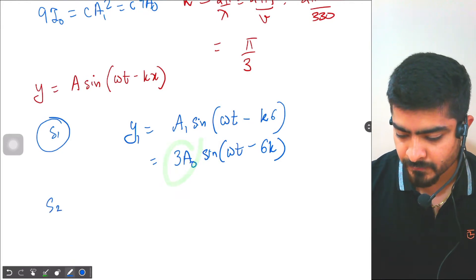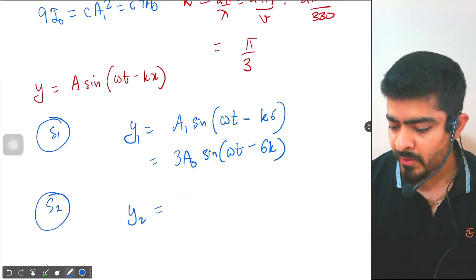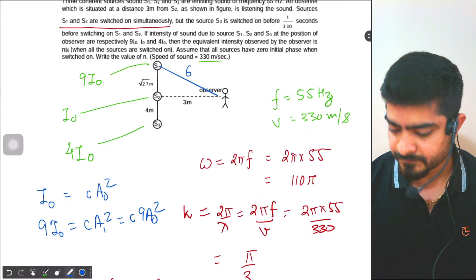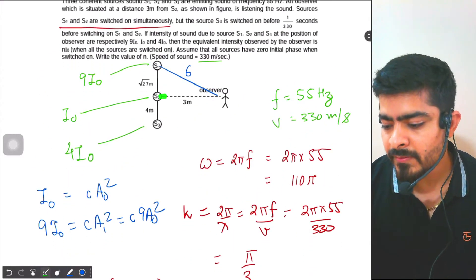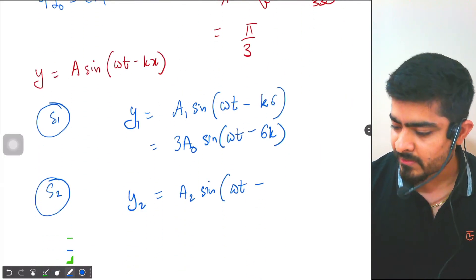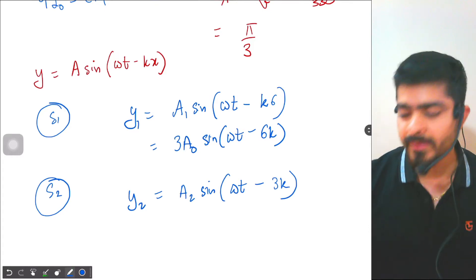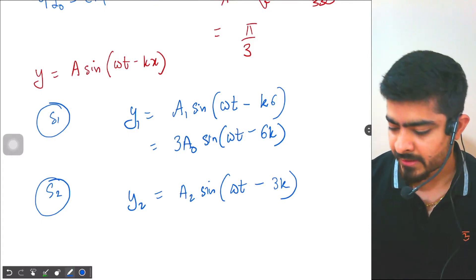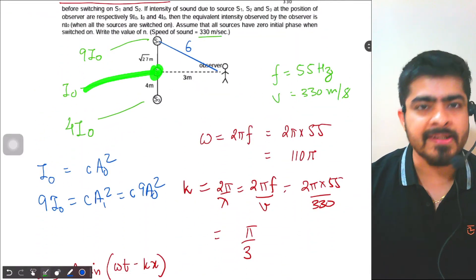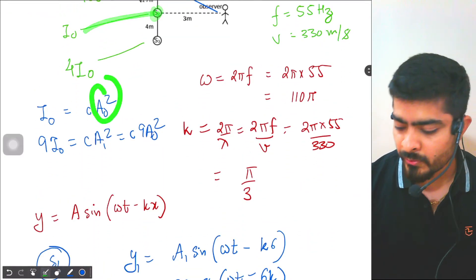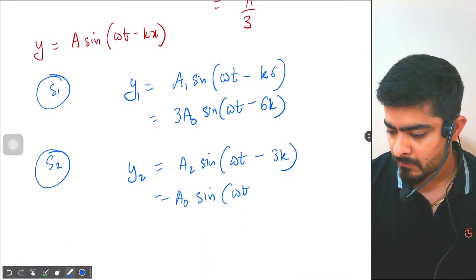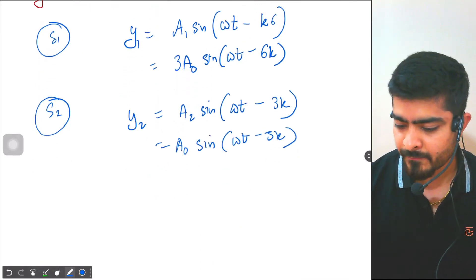For S2: y₂ = a₂ sin(ωt − kx). The source S2 travels a distance of 3 meters, so kx is replaced by 3k. S2 produces intensity I₀, so its amplitude is a₀. Therefore: y₂ = a₀ sin(ωt − 3k).